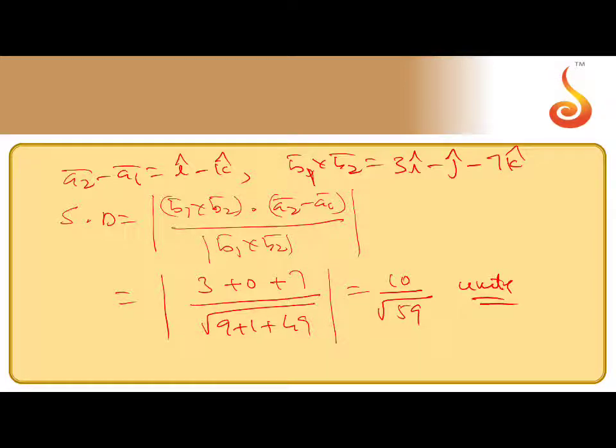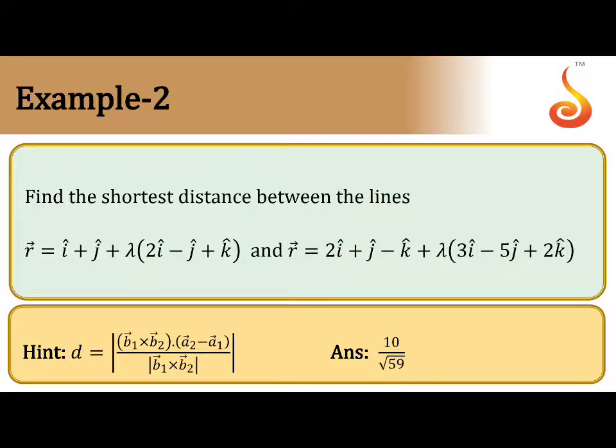The dot product: 3 × 1 = 3, ĵ is 0, plus 7 = 10. So it's 10/√59 units. That is the distance between the two lines. 10/√59 is the answer for this case.